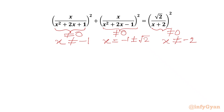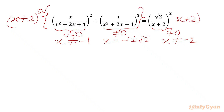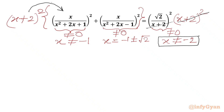Now I will multiply the given equation by (x+2)² on both sides. We multiply this side and the RHS also by (x+2)², since we have x cannot equal minus 2. We cancel (x+2)² from the RHS denominator, and I take (x+2)² into the square bracket, so I can write x times (x+2) in the denominator.